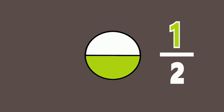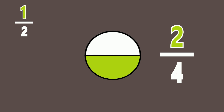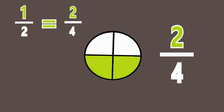It can also be two fourths. One half is equal to two fourths because you put this line through it, and there you have two fourths.